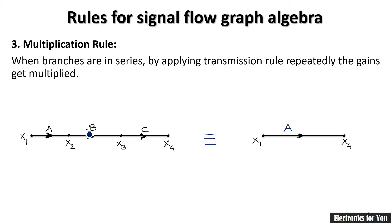Individual gains are a, b, and c respectively, therefore it will be a multiplied by b multiplied by c. So this is our multiplication rule.